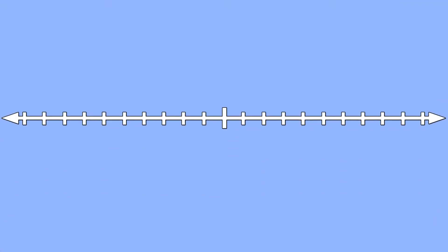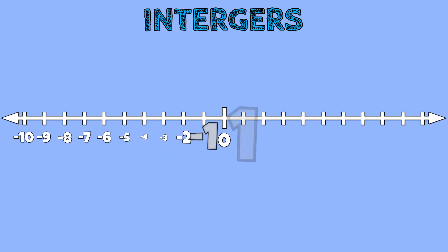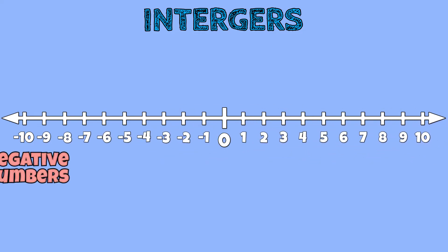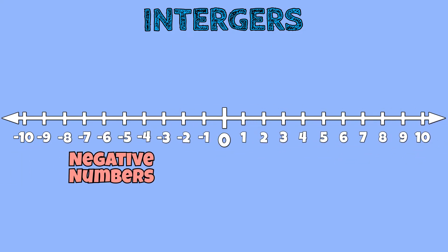So let's explore how integers are represented on a number line. Negative numbers are numbers that are to the left of 0 on a number line. Any negative number is smaller in value than 0 or any positive number.